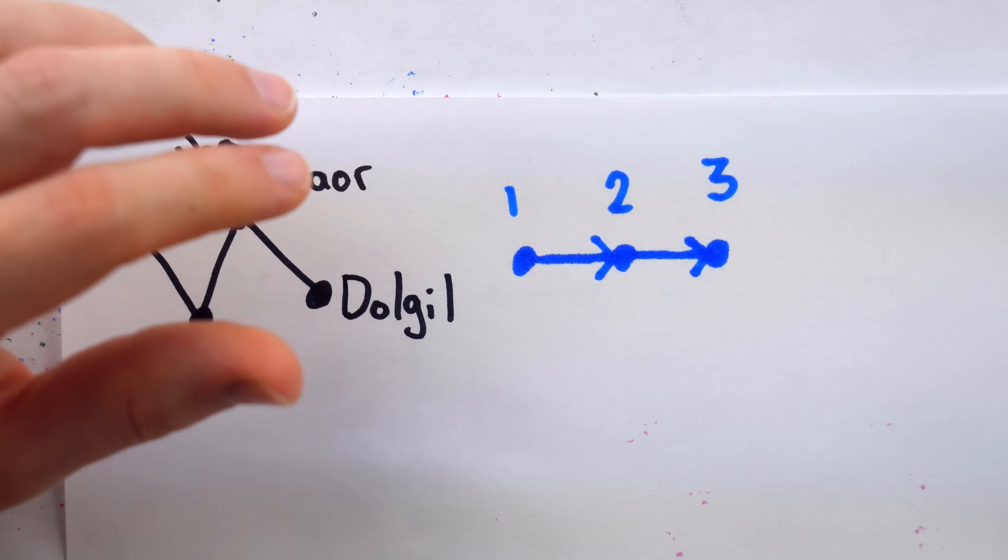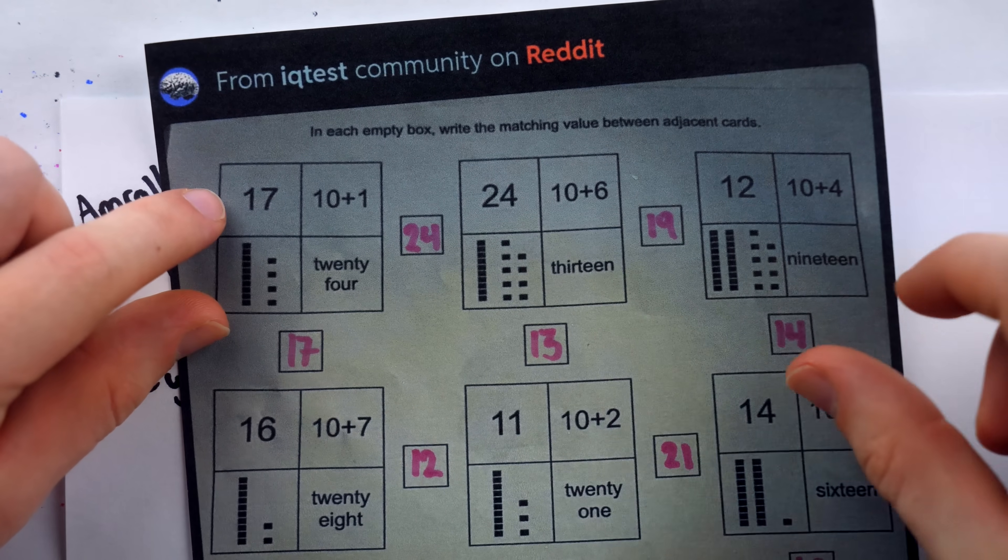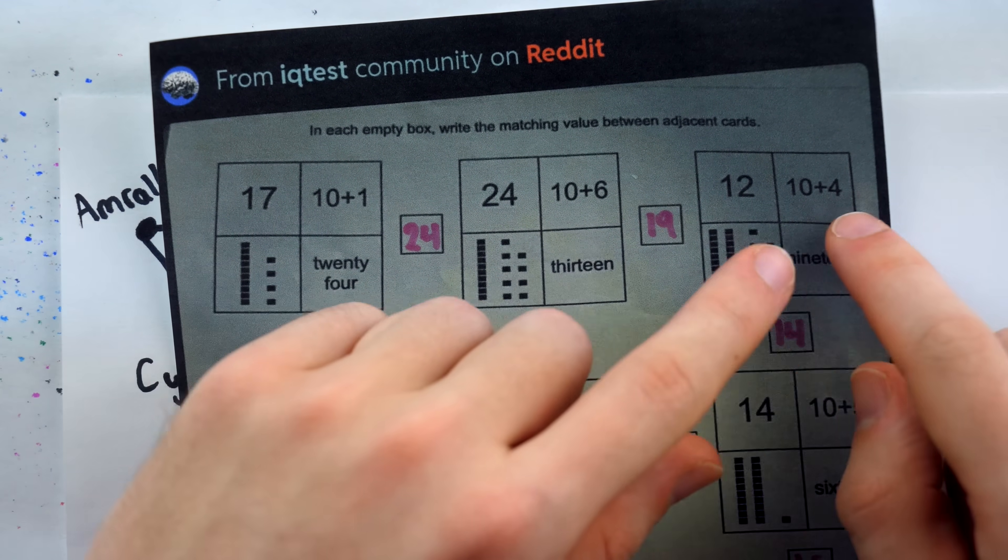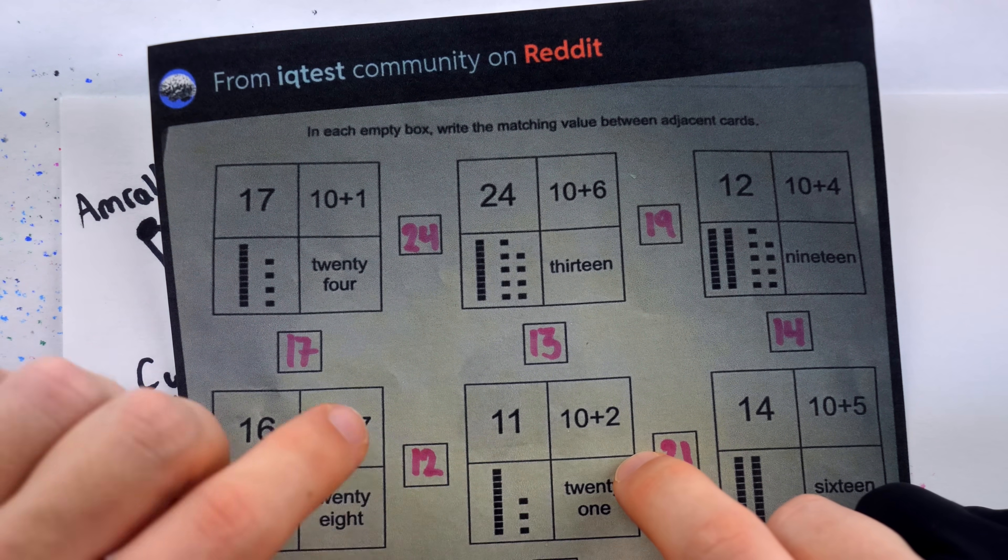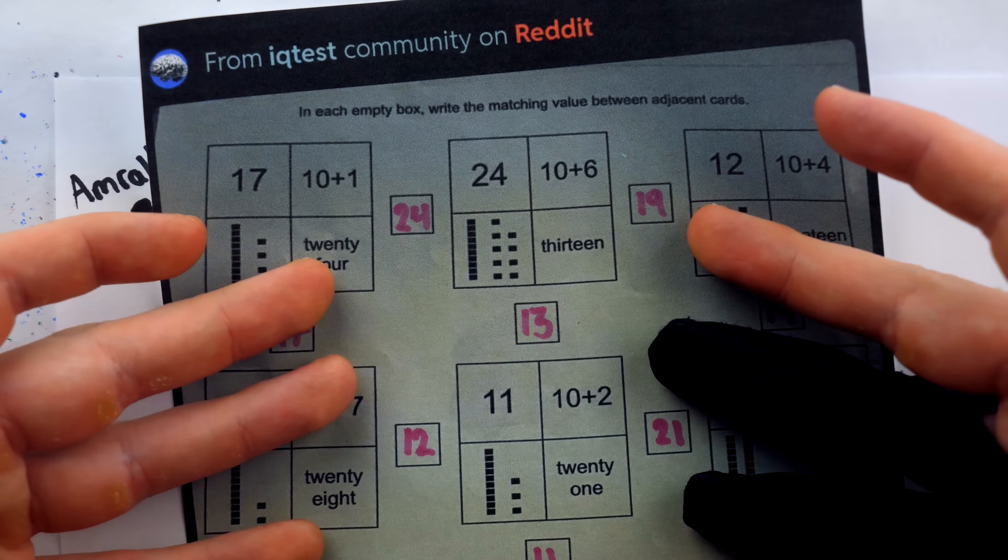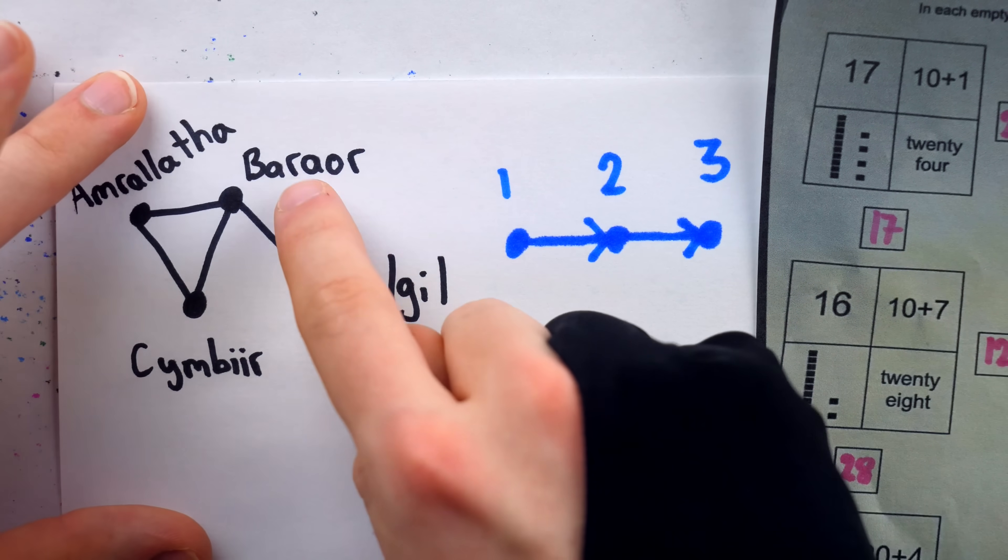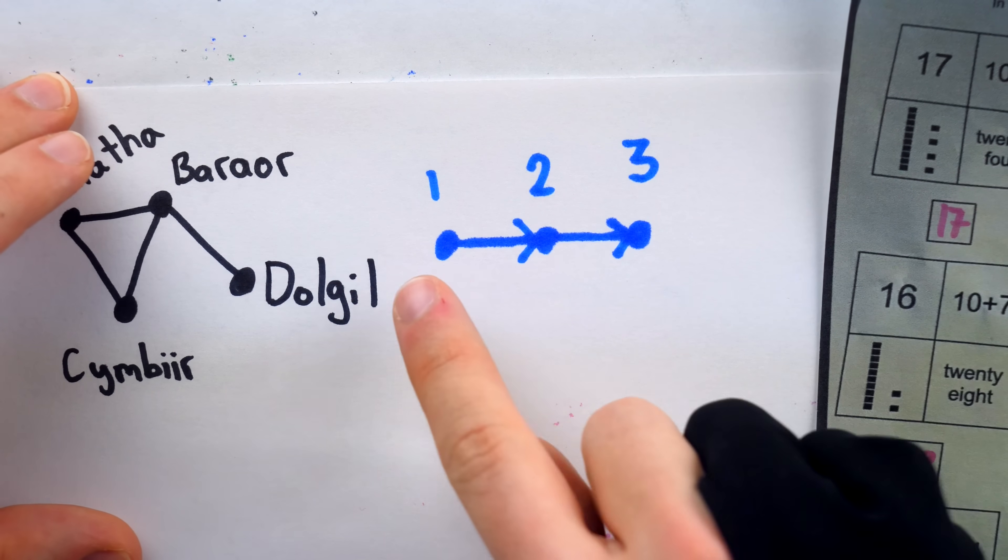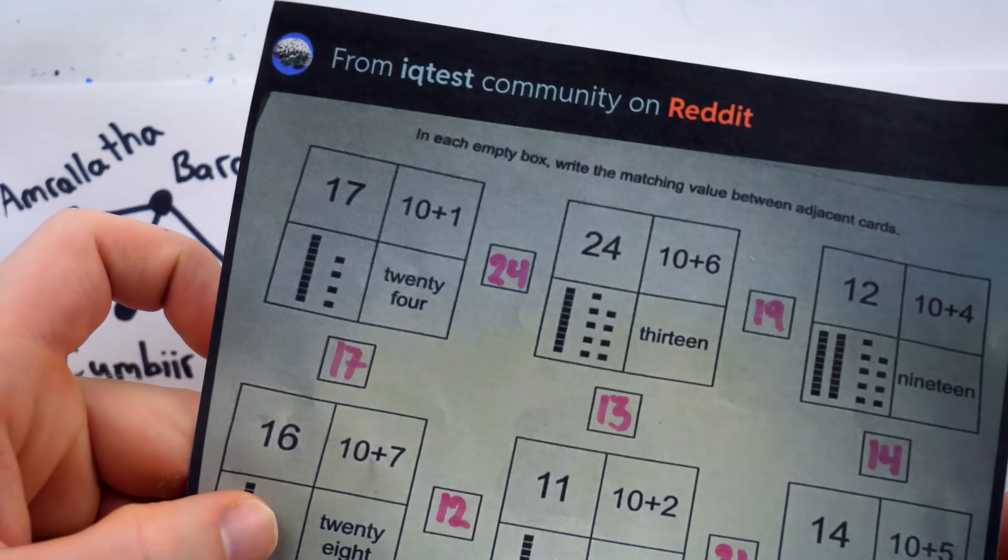So in the first grade math worksheet we have vertices, but the vertices are these sets of number representations, and the edges, in this case, don't have direction, so it would be more like this graph, less like this graph. Because in this worksheet, the relationship that this graph is showing has a number in common.